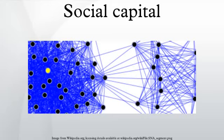In sociology, social capital is the expected collective or economic benefits derived from the preferential treatment and cooperation between individuals and groups. Although different social sciences emphasize different aspects of social capital, they tend to share the core idea that social networks have value.